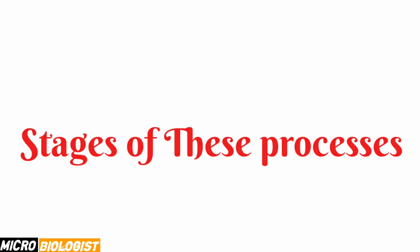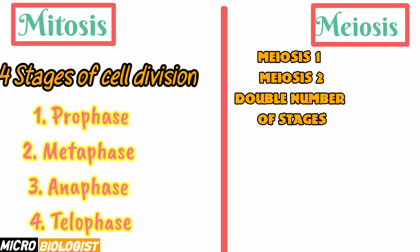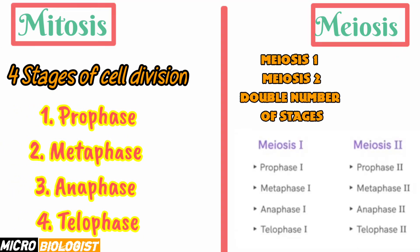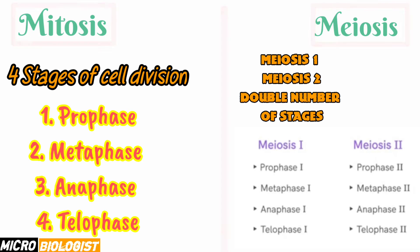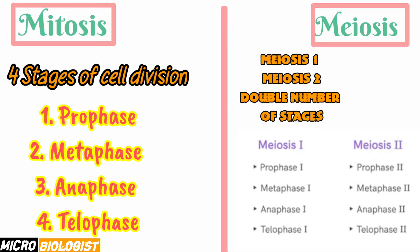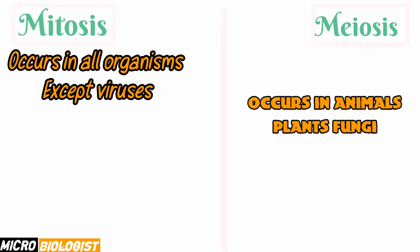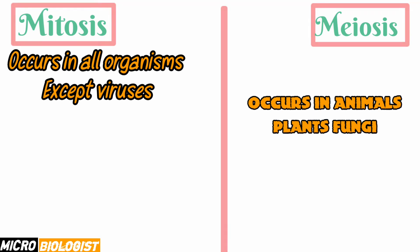The next difference concerns the stages of these two processes. Meiosis has four stages of cell division since it undergoes both meiosis one and meiosis two, giving it double the number of stages compared to mitosis. Another difference is that mitosis occurs in all organisms except viruses, while meiosis occurs in animals, plants, and fungi.